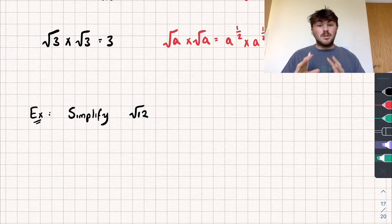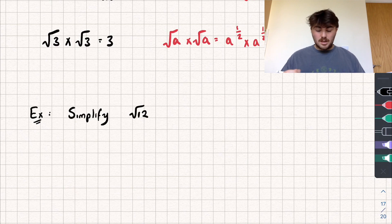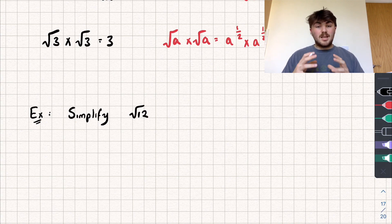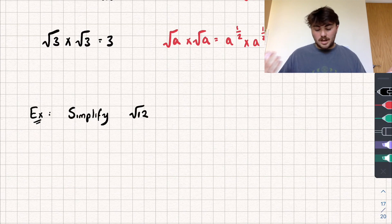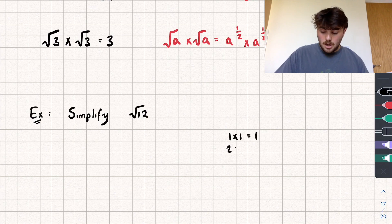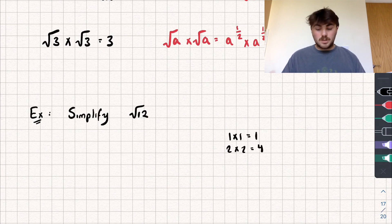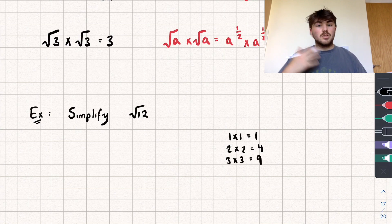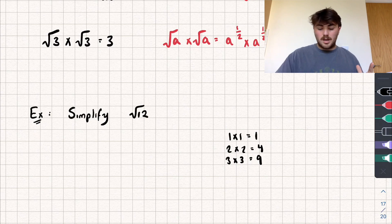To simplify, we're going to use the first rule and try to write the number inside the square root as a square number multiplied by something else. A square number is what you get when you take an integer and multiply it by itself. So: 1×1=1, so 1 is a square number; 2×2=4, so 4 is a square number; 3×3=9, so 9 is a square number; and so on — 16, 25, 36 are all square numbers.